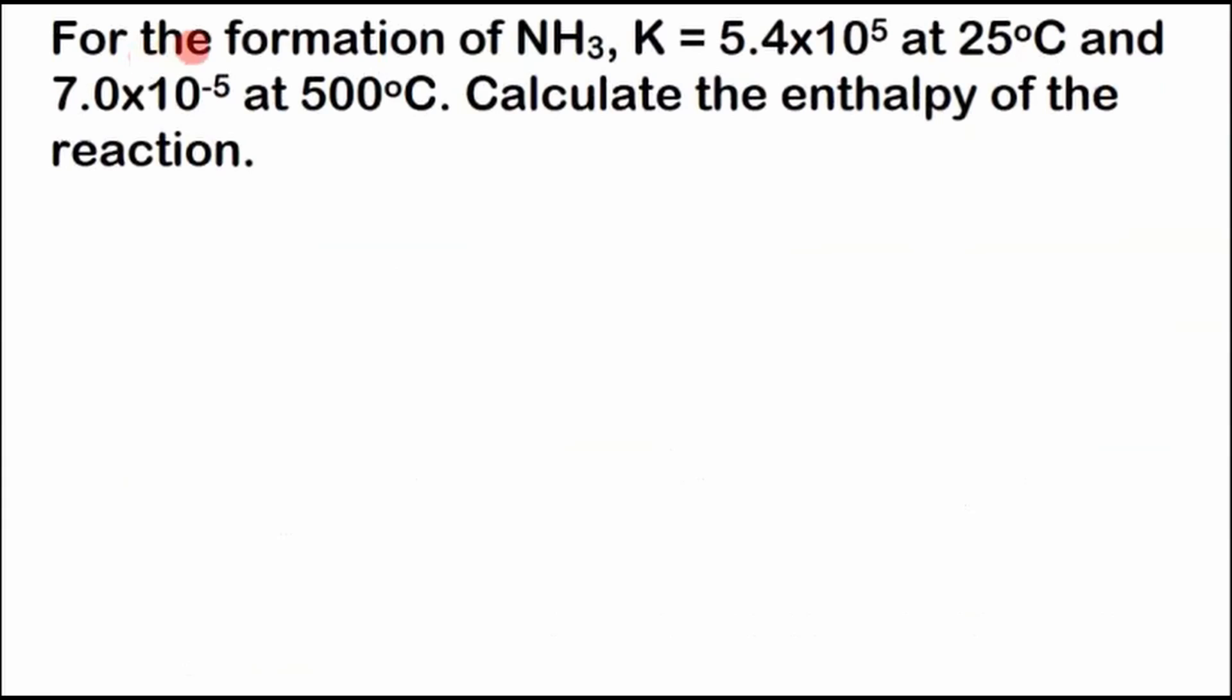Next exam problem. For the formation of ammonia, equilibrium constant is 5.4 times 10^5 at 25 degrees Celsius, and this value 7.0 times 10^(-5), much smaller at 500 degrees Celsius. Calculate the enthalpy of the reaction. So enthalpy of the reaction is our ΔH° for the reaction here.